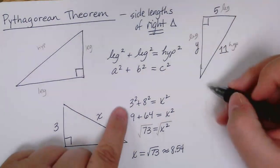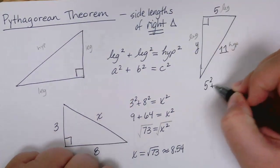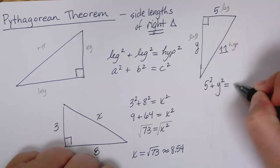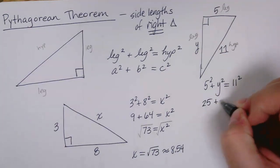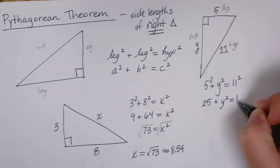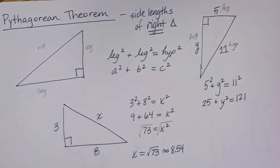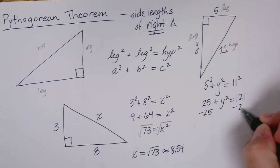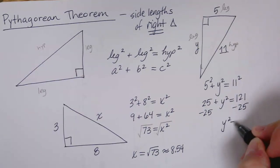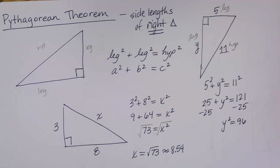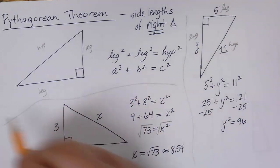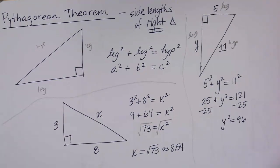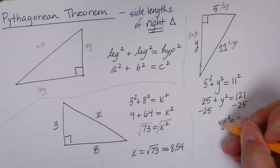It's going to be leg squared is 5 squared plus the other leg squared is y squared equals 11 squared. And then I can go ahead and square 5 and square 11. And notice that if I'm looking for a leg, what I'm going to have to do next is subtract. So I'm going to have to subtract 25 from both sides. y squared equals 96. And I have y squared now. I have y squared, but I'd like to know what y is, not y squared. So I'm going to take the square root of both sides.